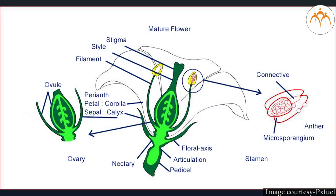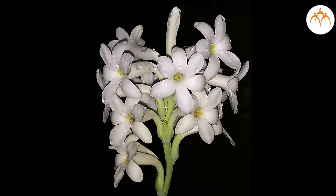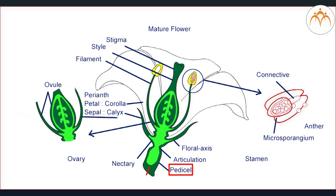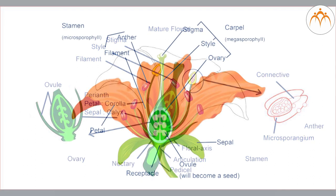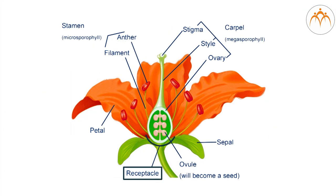Hibiscus flower has a stalk called pedicel. Some flowers like tuberose do not have a stalk. Pedicel at one end is attached to stem and its other end is expanded and swollen. This is called receptacle. Parts of the flower are arranged on the receptacle.